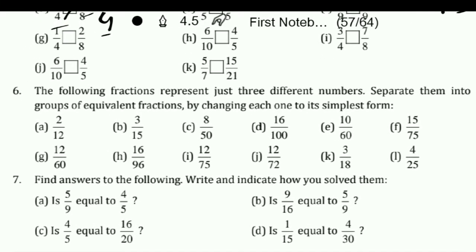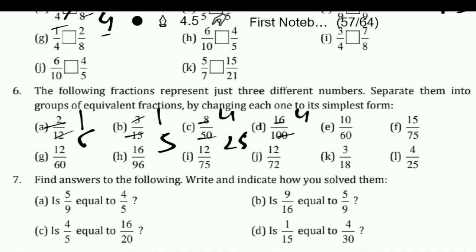Question number 6: the following fractions represent just 3 different numbers. Separate them into 3 groups of equivalent fractions by converting each to its simplest form. First, convert: 1 upon 6, then 1 upon 5, then some cancel by 2 to give 4 upon 25, and others cancel by 4 to also give 4 upon 25. So there may be one more pair giving 4 upon 25. Arrange: which are 1 by 5, which are 1 by 6, and which are 4 by 25.